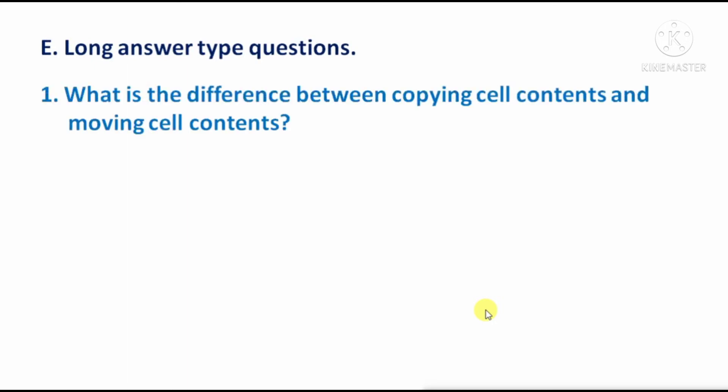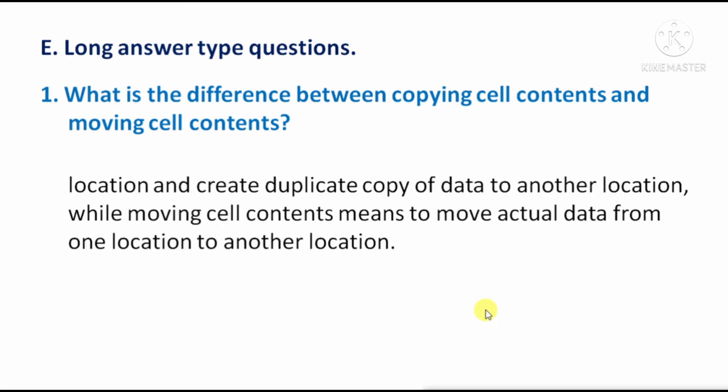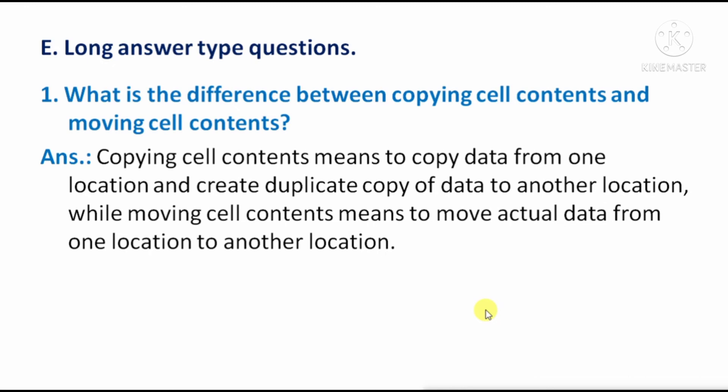Long answer type questions. First question: What is the difference between copying cell contents and moving cell contents? Copying cell contents means copying data from one location and creating a duplicate copy at another location. While moving cell contents means moving the actual data from one location to another — removing it from the original location.